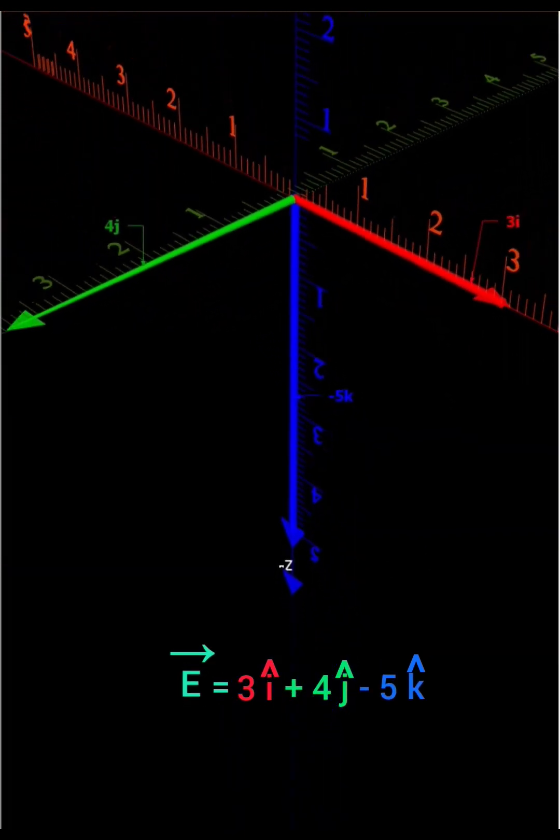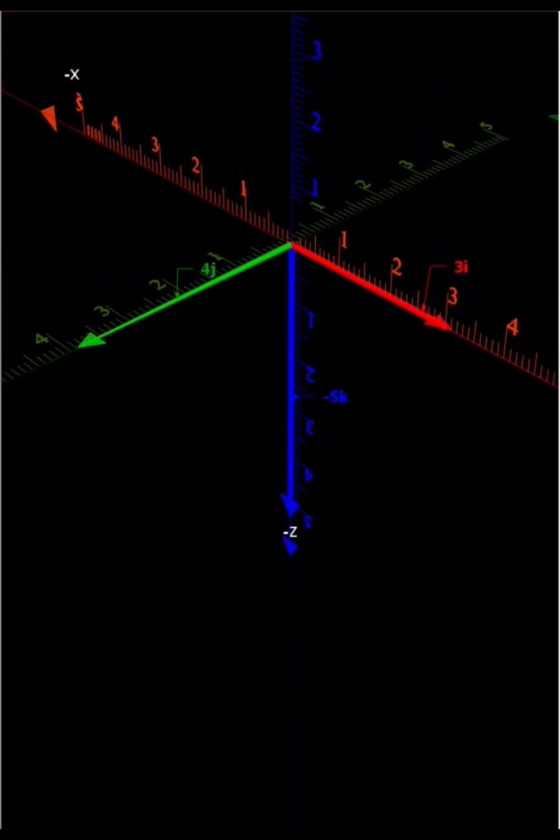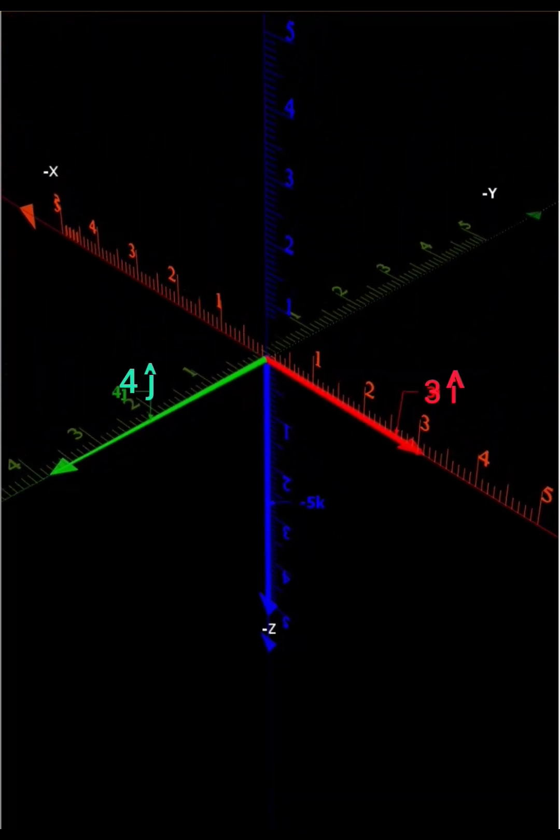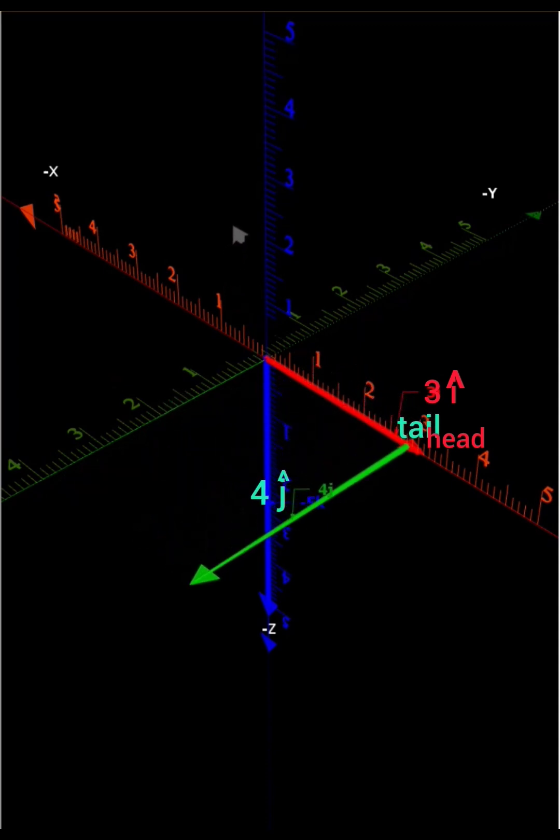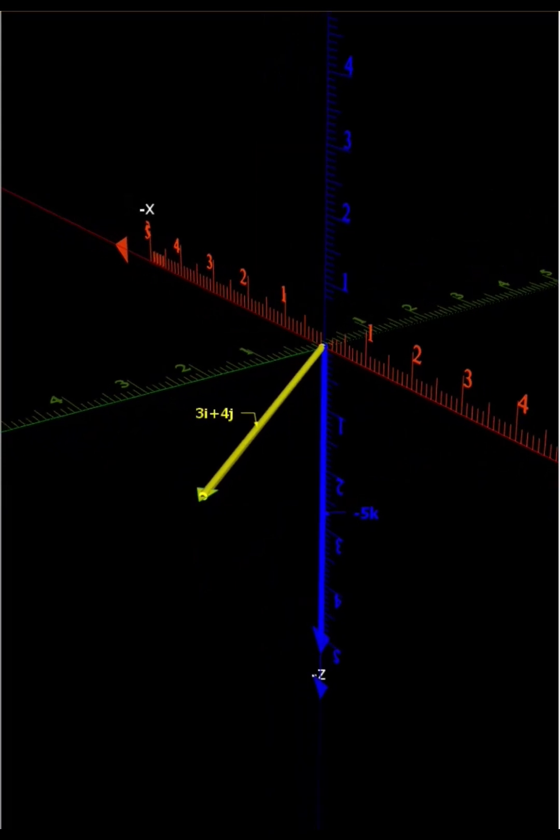To find the direction of E, displace the vector 4j parallel to itself such that its tail coincides with the head of vector 3i cap. 3i cap plus 4j cap is the resultant of these two vectors.